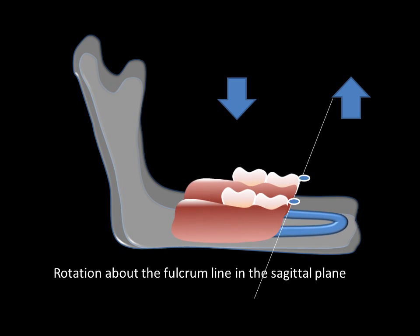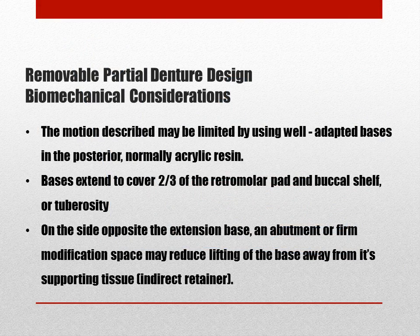Movement in the sagittal plane is detected by applying digital pressure to the posterior definitive or trial denture base and observing lifting of the anterior segment. The extent of the rocking depends on the quality of supporting tissues, but can be limited by using well-adapted bases, which are extended within physiologic limits. Indirect retainers are employed on the opposite side of the fulcrum to engage as the base attempts to move away from the soft tissue. Occasionally, the corrected cast procedure or periodic reline may be necessary.